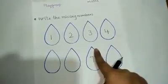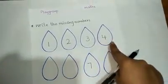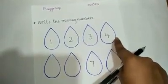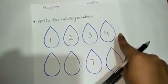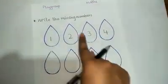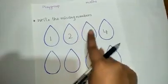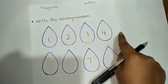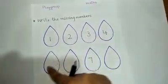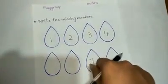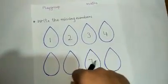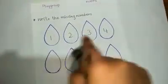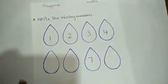What comes after three? It's four. Which number comes after three? Four! One, two, three, four. What comes after four? Do you know what number comes after four? Five!